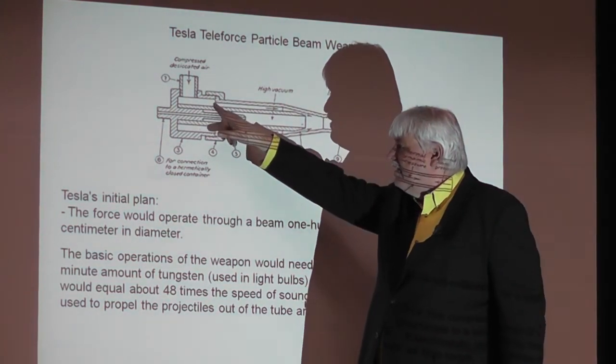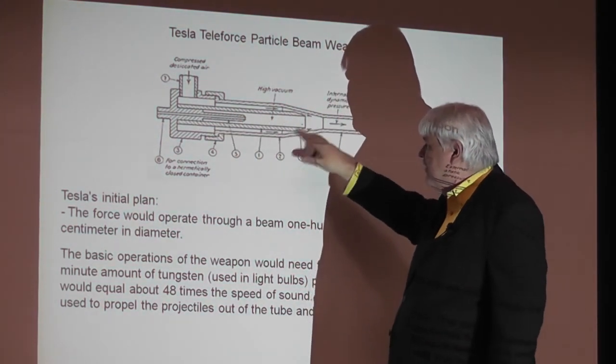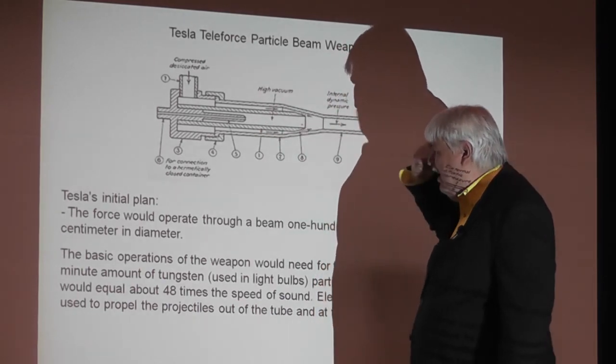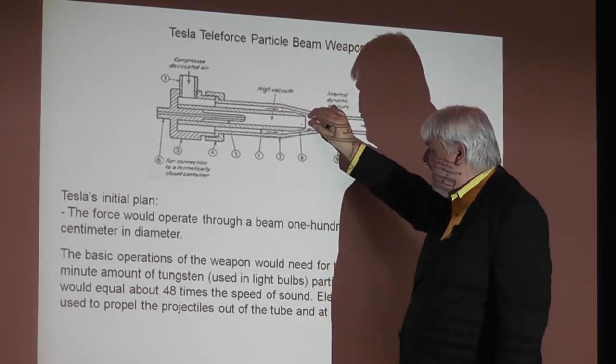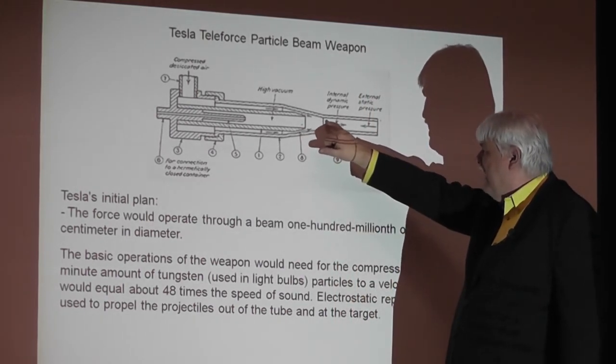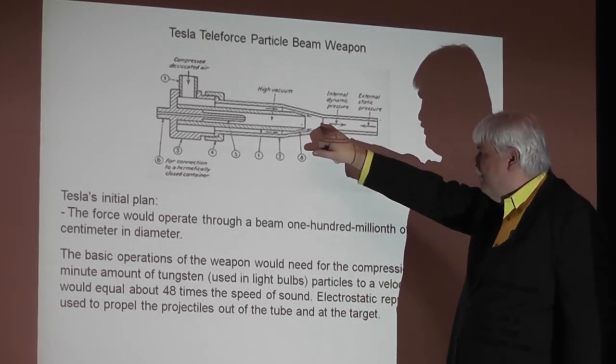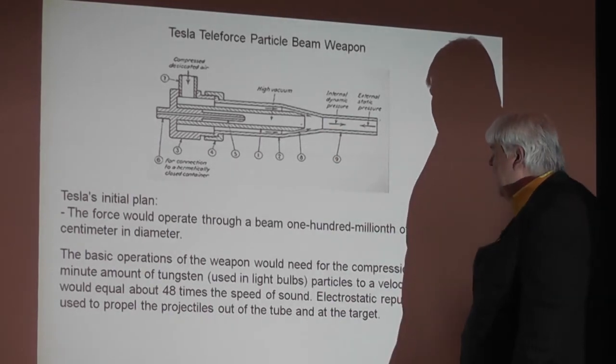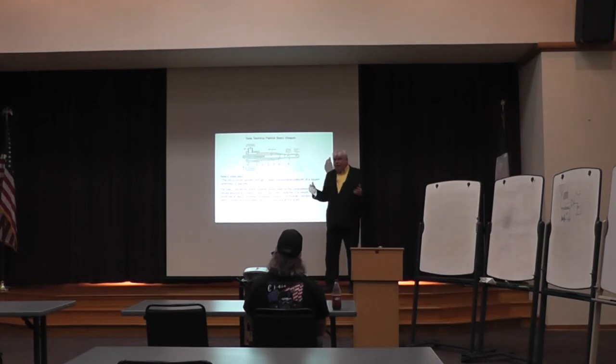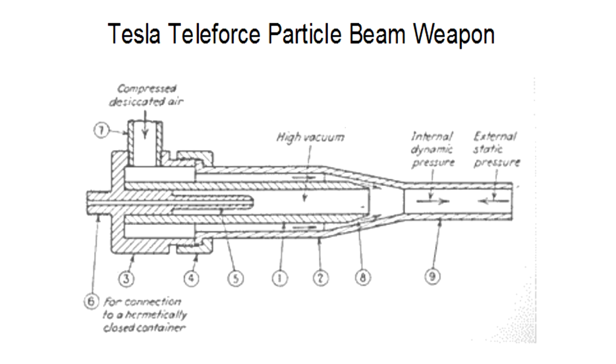Here's compressed air coming in with tungsten particles in it. That goes into here. Here's an electrical charge generated at this point. It causes the tungsten to interact with the charge at this point and causes a static electrical pressure that would force the beam or particles out that end. If you take anything that's a particle and you move it at 48 times the speed of sound and it hits something, it's going to damage it.